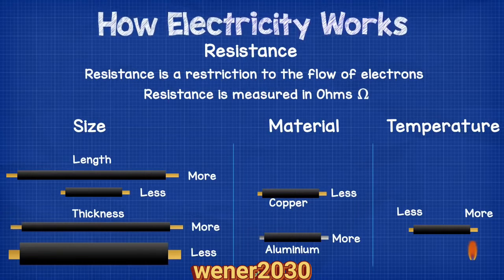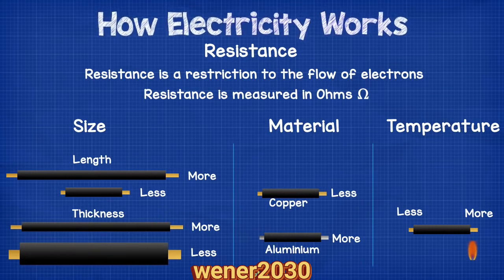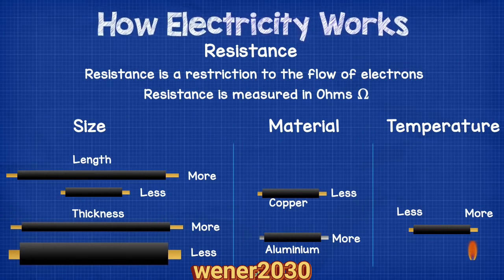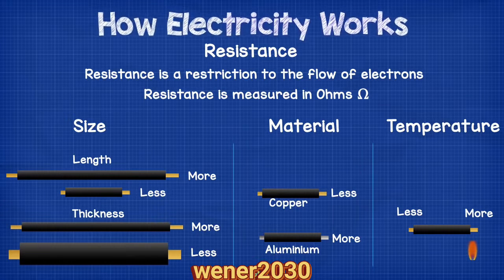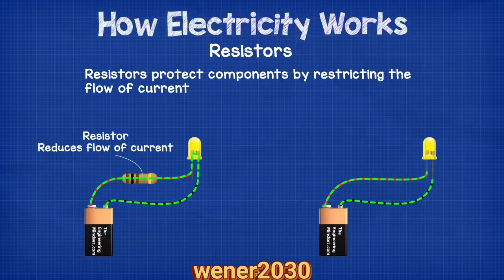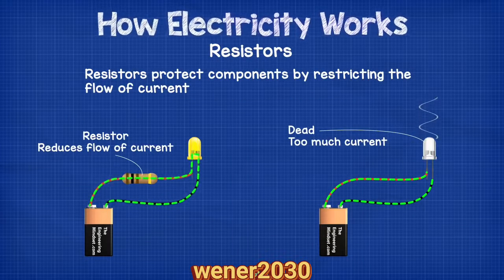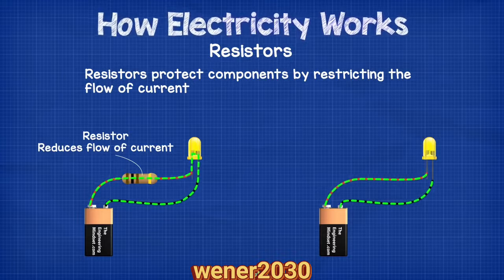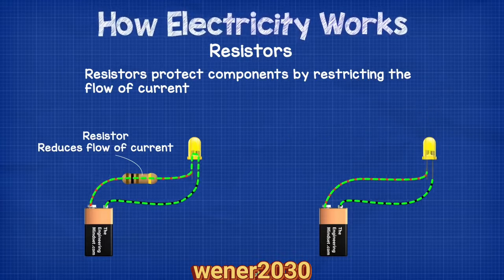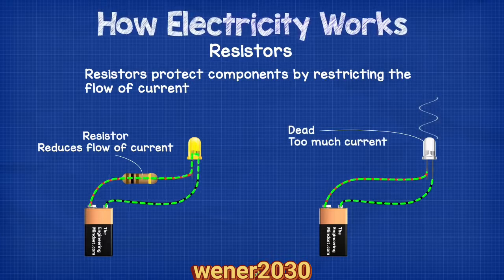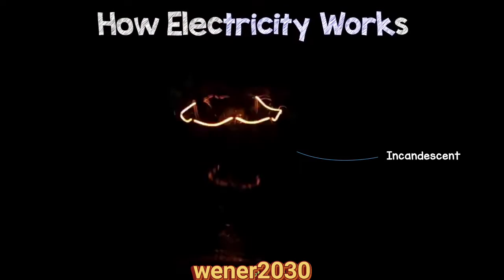Resistance is a restriction to the flow of electrons in a circuit. The wire which carries the electrons will naturally have some resistance — the longer the wire the greater the resistance, the thicker the wire the lower the resistance. Resistance to the flow of electrons is different for each material, and the temperature of the material can also change the resistance. Electrical circuits use specially designed components known as resistors to purposely restrict the flow of electrons. This is either to protect other components from too many electrons flowing through them, or it can be used to create light and heat, such as in an incandescent light bulb.